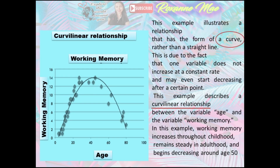This example illustrates a relationship that has the form of a curve rather than a straight line. This is due to the fact that one variable does not increase at a constant rate and may even start decreasing after a certain point. This example describes a curvilinear relationship between the variable age and the variable working memory. In this example, working memory increases throughout childhood, remains steady in adulthood, and begins decreasing around age 50.